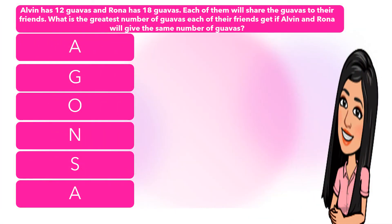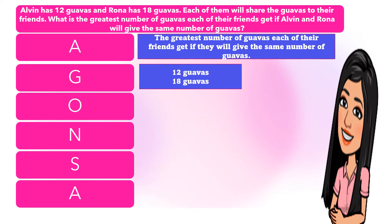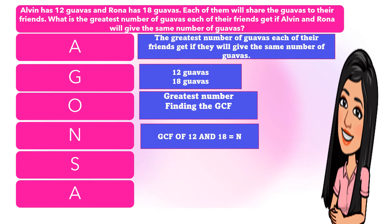Let us use AGONSA in solving the word problem. What is A in the problem? The greatest number of guavas each of their friends can get if they will give the same number of guavas. How about G? 12 guavas and 18 guavas. For O, we have 'greatest number.' When we say greatest number, we are going to find out the GCF. When we see the word 'greatest' in the problem, we find the GCF. So for the number sentence, we have: GCF of 12 and 18 equals N.